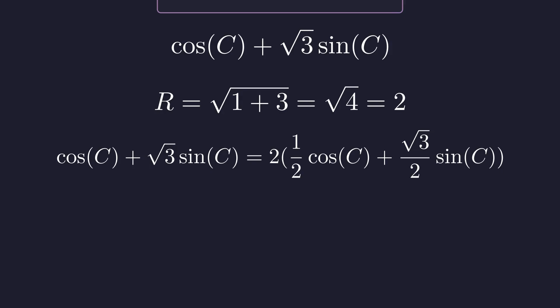Factoring out the two reveals something beautiful. Those coefficients are familiar trigonometric values that any trig student would recognize. 1 half is exactly sine of 30 degrees, and square root of 3 over 2 is cosine of 30 degrees.